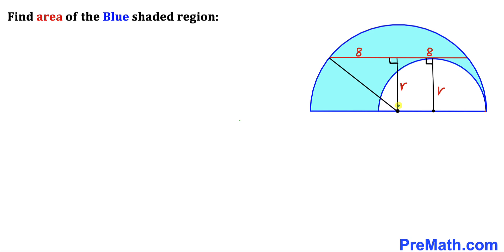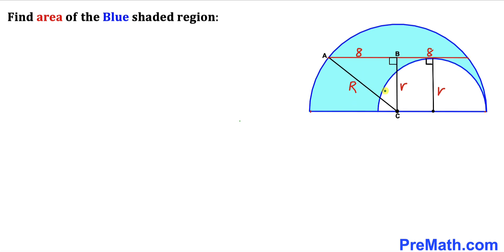In this next step, I have connected the center point to the endpoint of the chord. We can see that this is the radius of the larger semicircle. Let me represent this radius by uppercase R. And here's our much nicer looking diagram.